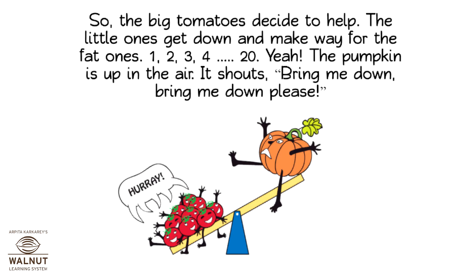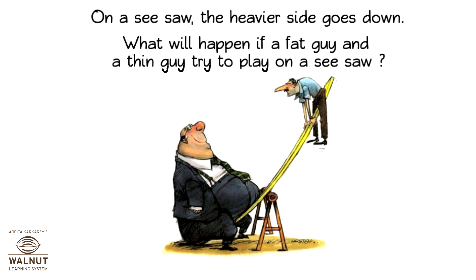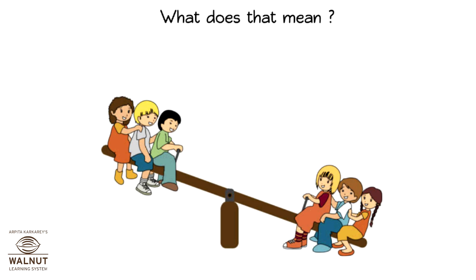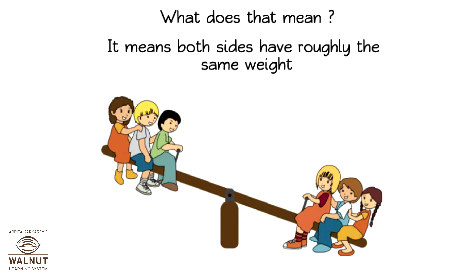The little ones get down and make way for the fat ones — one, two, three, four — and there are twenty fat tomatoes sitting there. Yay! The pumpkin is up in the air. It shouts, 'Bring me down, bring me down, please!' On a seesaw, the heavier side goes down. If a fat guy and a thin guy try to play on a seesaw, if both sides are balanced, you can play well and have fun. That means both sides have roughly the same weight.